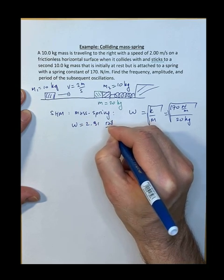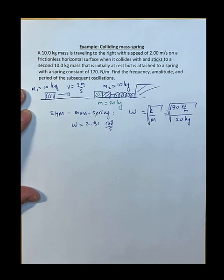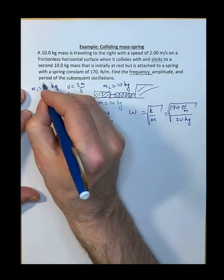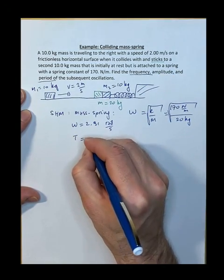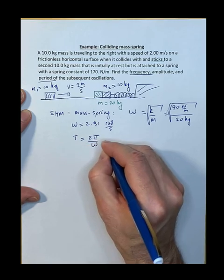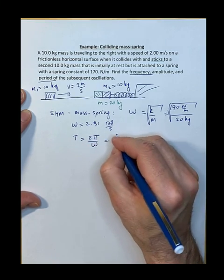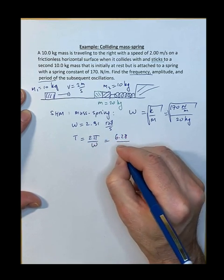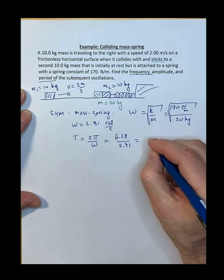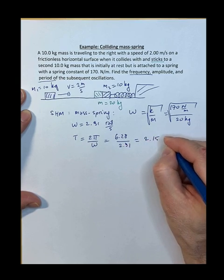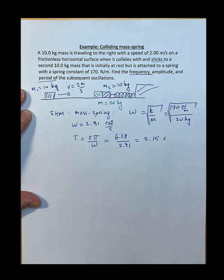This comes out to ω = 2.91 radians per second. Once you know the angular frequency you can immediately find the period: T = 2π divided by ω, which is 6.28 divided by 2.91, giving T = 2.15 seconds.